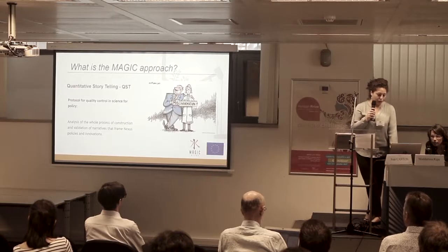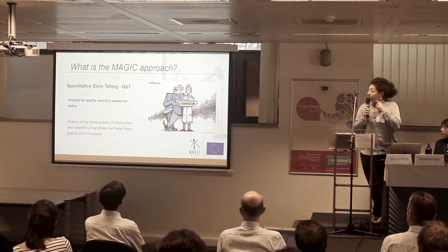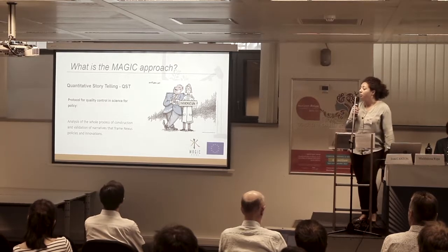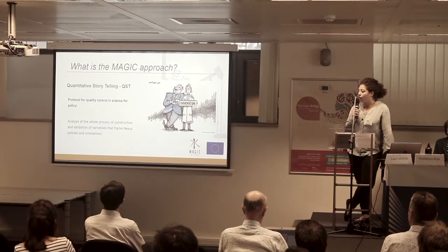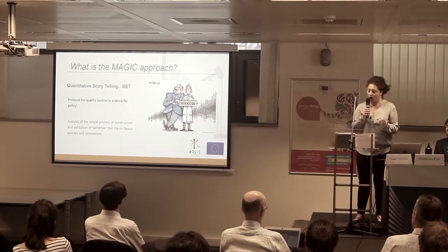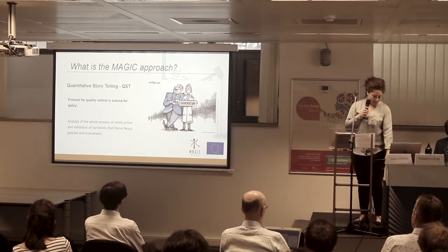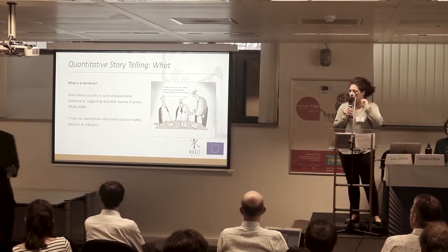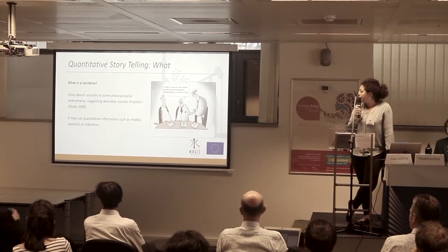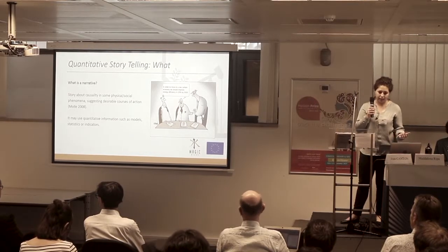The approach we used in MAGIC is called quantitative storytelling. This is a very innovative aspect of the MAGIC project. Quantitative storytelling is a protocol to check the quality of science for governance. We move from the production of results of innovation and technologies to the analysis of the whole process of construction and validation of narratives that frame the Nexus policy and innovation. A narrative is a story about causality in physical and social phenomena suggesting desirable courses of action, and it may use quantitative information like models and indicators.